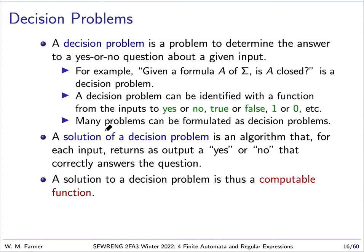Many problems can be formulated as decision problems. A solution of a decision problem is an algorithm that tells us how to take an input and come up with either yes or no as the output. In other words, compute yes or no. So a solution to a decision problem is a computable function. Decision problems are very important and their solutions are computable functions. We will be talking a great deal later about decision problems.